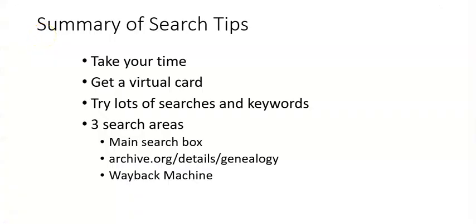Here's my recap of Internet Archive's getting-started tips for genealogists: take your time, get a virtual card, try lots of different searches and keywords — including that trick I showed you for eliminating extraneous keywords when searching within a resource. Use those three different portals: the main search box, the genealogy search area, and the Wayback Machine for finding old websites and pages. I'm Sunny Morton with Family Tree Magazine. Enjoy exploring the Internet Archive.